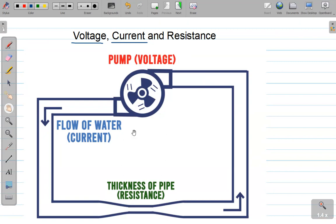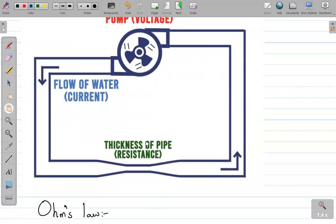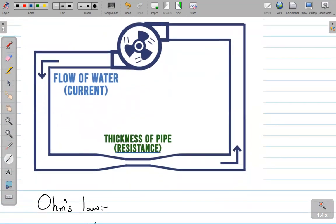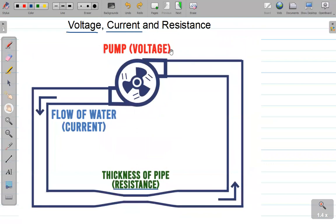But there is a limiting factor here, and that limiting factor is the resistance. Now suppose we think of resistance as this constriction in the pipe, this narrow area in the pipe which can only allow so much water to pass through. Now suddenly the voltage really does not matter.